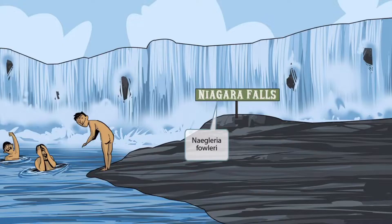Our story of Naegleria fowleri takes place in Niagara Falls. This is where these hooligans like to go skinny dipping. Niagara Falls is all freshwater — remember, it drains rivers and lakes, not saltwater, which you'd find in the ocean.